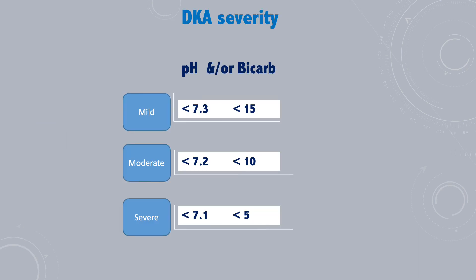DKA severity can be categorized as mild, moderate, and severe according to the pH level and/or bicarb level, as you can see in this slide.